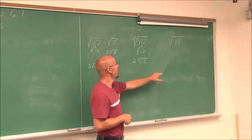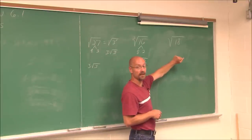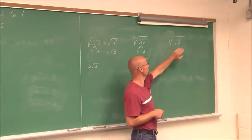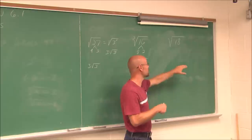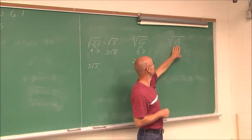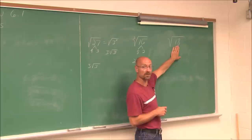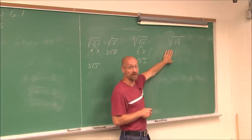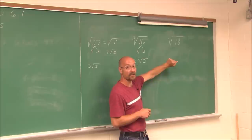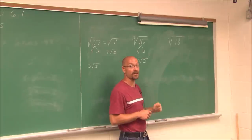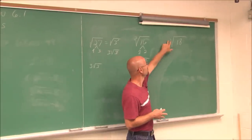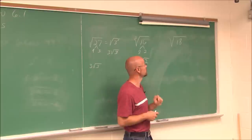Here we have the square root of 18. It's not a perfect square or perfect cube. This is a good candidate to factor down — identify its factors and see if any are perfect squares. I'll leave this one for you to try: factor it down and take the square root of any perfect square factors.